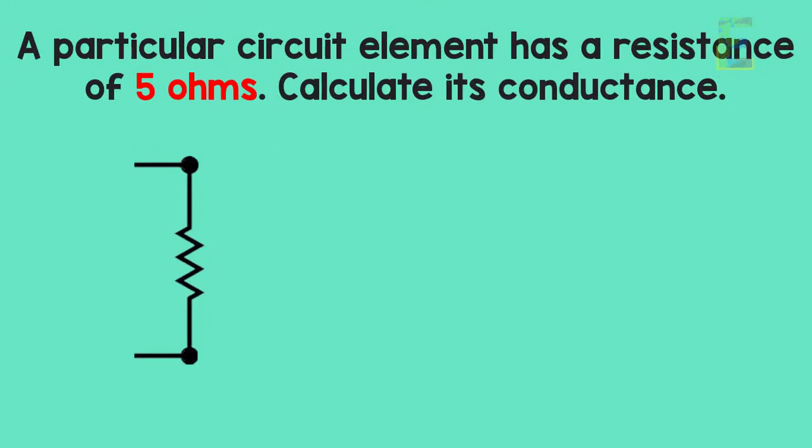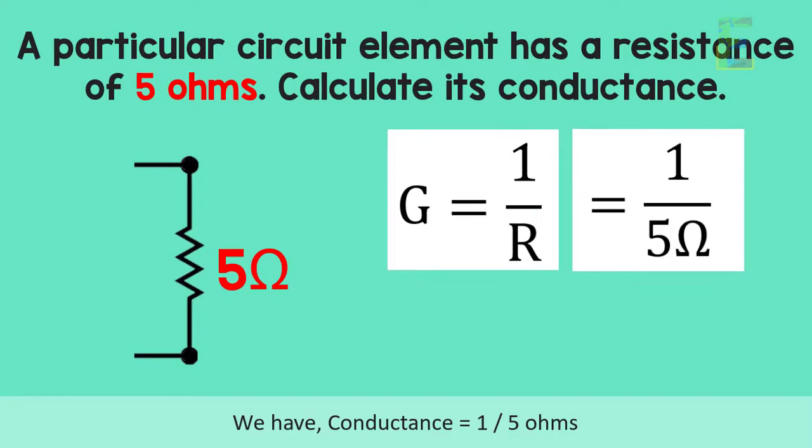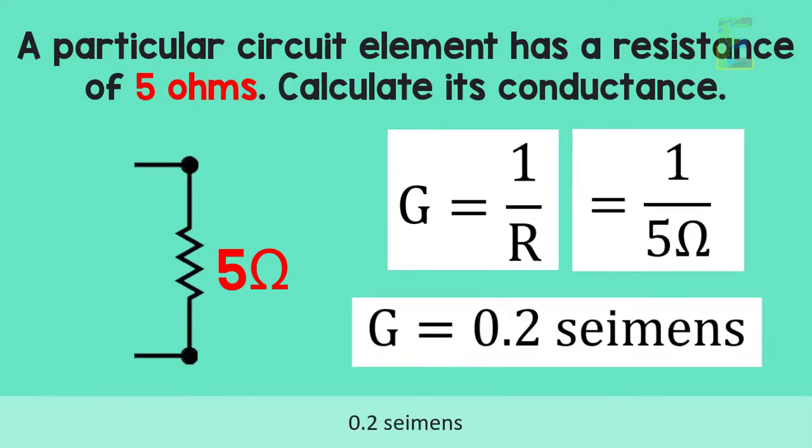Now since G equals 1 over R, we have conductance equals 1 over 5 ohms, which gives us the final answer of 0.2 siemens.